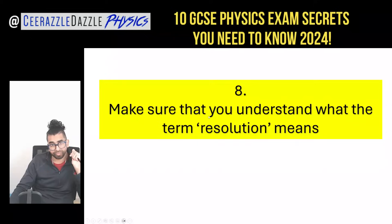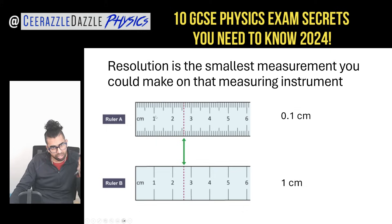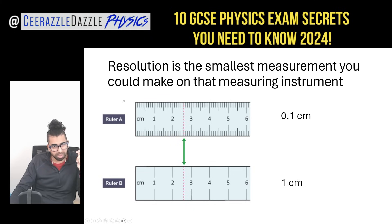Tip eight: make sure you understand what the term resolution means. Resolution is simply the smallest measurement you can make on a measuring instrument. For example, Ruler A with millimetre markings has a resolution of 0.1 cm (1 mm), whereas Ruler B with only centimetre markings has a resolution of 1 cm. Ruler A is the better option because it has higher resolution.